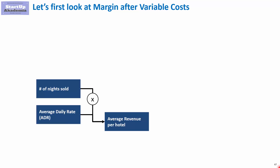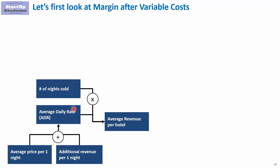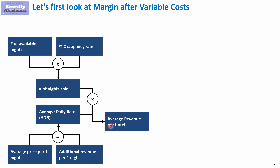This will obviously require us to model revenues, and those revenues depend on two things: number of nights sold and the average daily rate — in other words, how much revenue we are generating per one room. If we go a little deeper into the average daily rate, we can divide it into two elements: the average price per one night and additional revenue per one night.